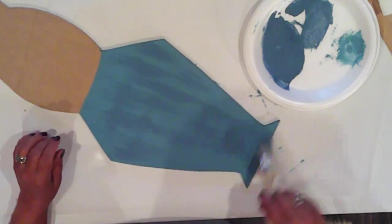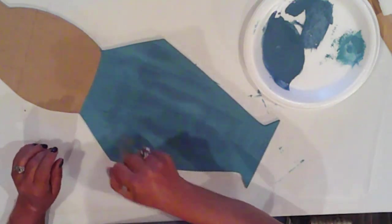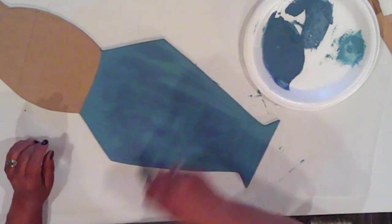And then I'll stroke horizontally. I want this to look like denim, so I'm trying to mimic the weave.